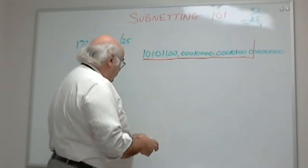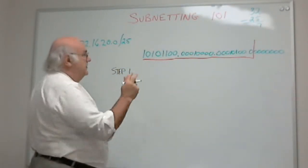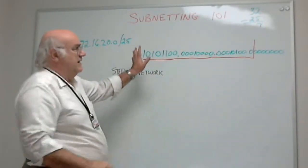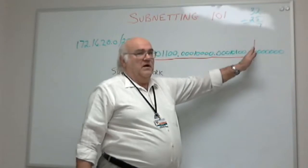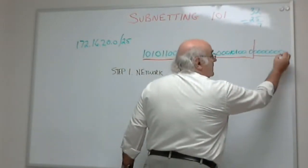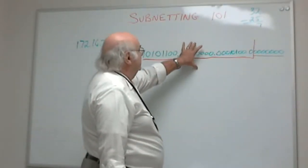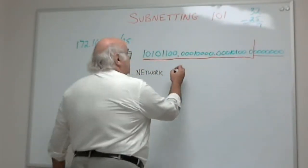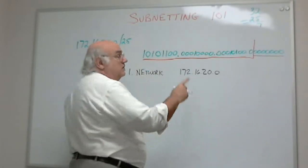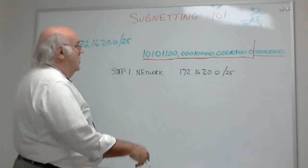So this is what we're working with. Our first step, your first step always should be: calculate your network. What is your network address? By writing this out in binary and drawing our fence or line where the network portion ends, we can always get our network address. Remember, in the network address, all host bits are zero. So this would be my network address: 172.16.20.0. I've calculated my network address. That's not the full network address. The full network address also includes a prefix, slash 25.